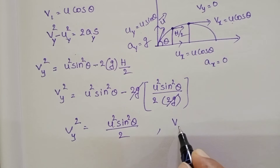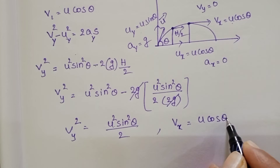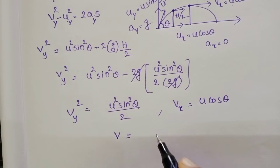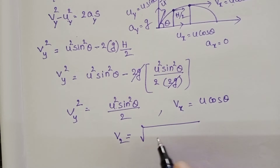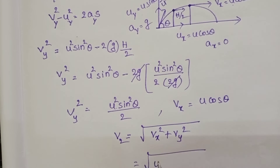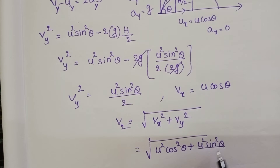The horizontal component remains the same: vx = u cos theta. So at half of the maximum height, the velocity v2 equals the square root of vx² + vy², which is the square root of u² cos²θ + u² sin²θ / 2.